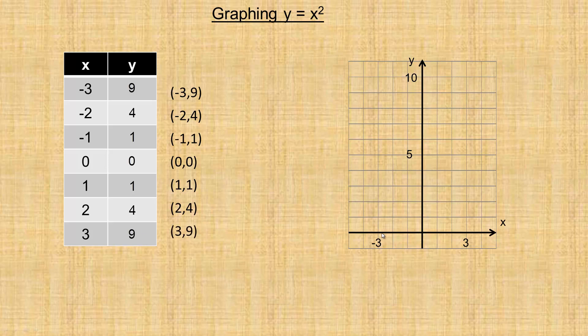So negative 3, 9 means from the origin we go left 3 and up 9. We're going to plot that point right there. Then negative 2, 4, so left 2, up 4. And then negative 1, 1, so left 1, up 1. We're going to plot that point. And here's 0, 0.